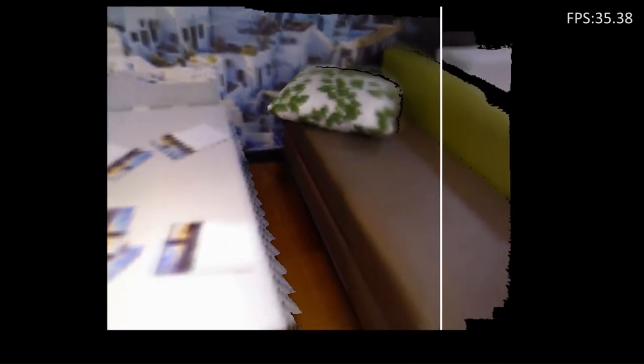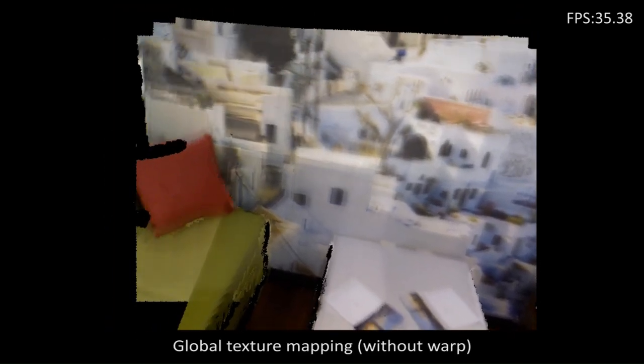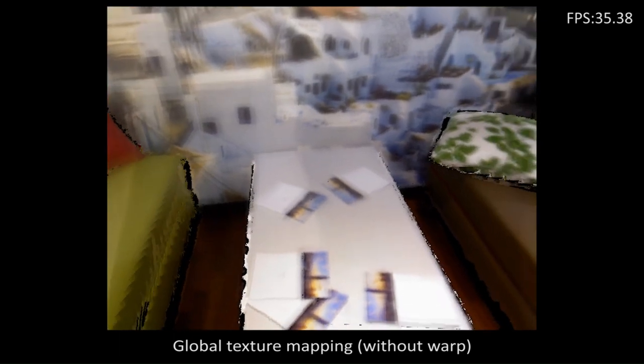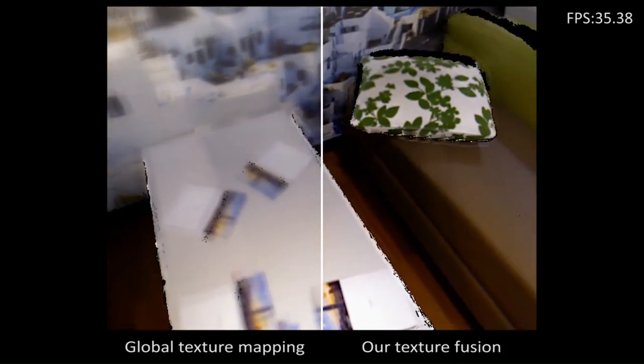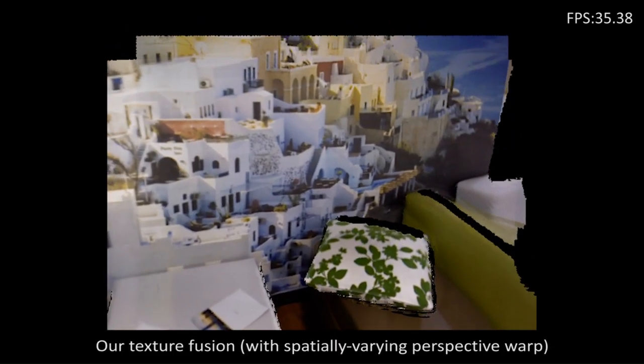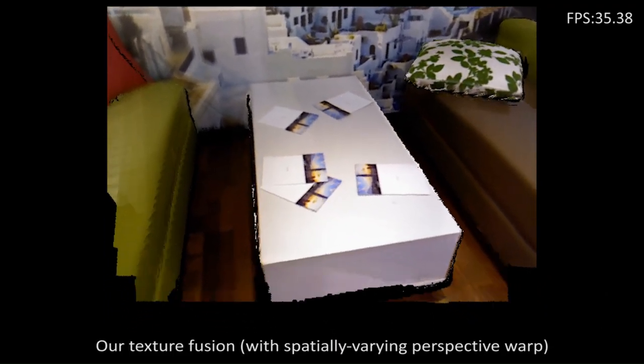The frame rate is 35 frames per second. Voxel representation has low resolution texture, limited by voxel resolution. Texture mapping without warping improves the quality but still blurred. Thanks to the spatially varying warp field, our TextureFusion integrates texture information with high quality.